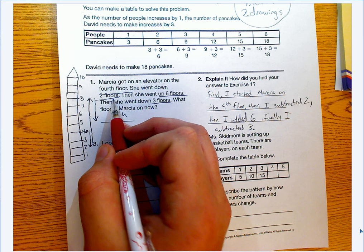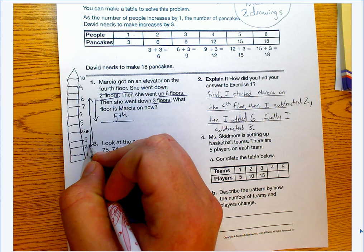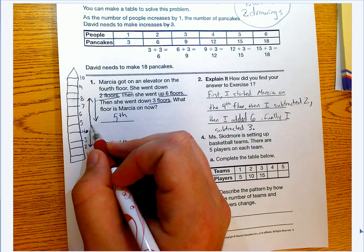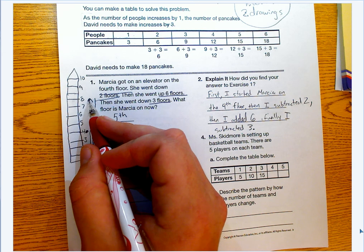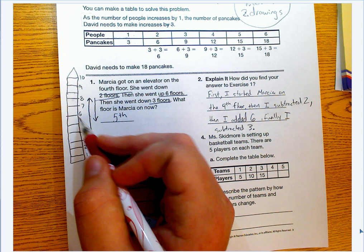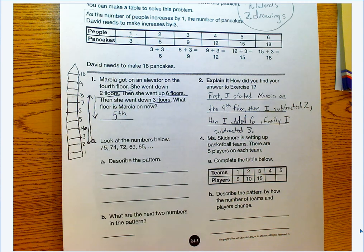That's the first step of my problem. Now she's on two, and then she goes up six floors. One, two, three, four, five, six. She's then on floor eight. Then she goes down three more. One, two, three, and she ends up on the fifth floor.